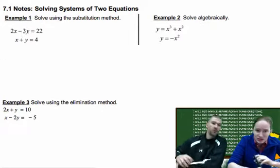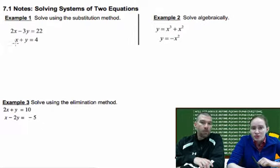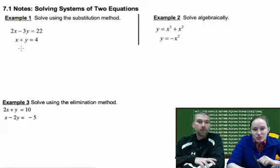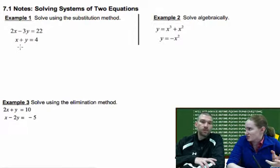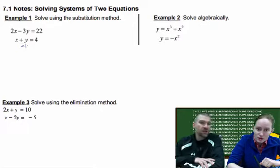Let's start off easy with Example 1, solve using the substitution method. That method means you take one equation and solve it for a variable and then plug it into the other one, substitute it into the other one. So we can solve either for X or Y, doesn't matter. How about let's solve for X just for kicks and giggles.